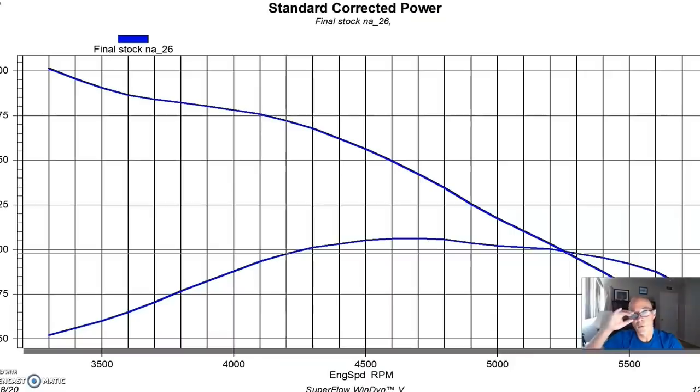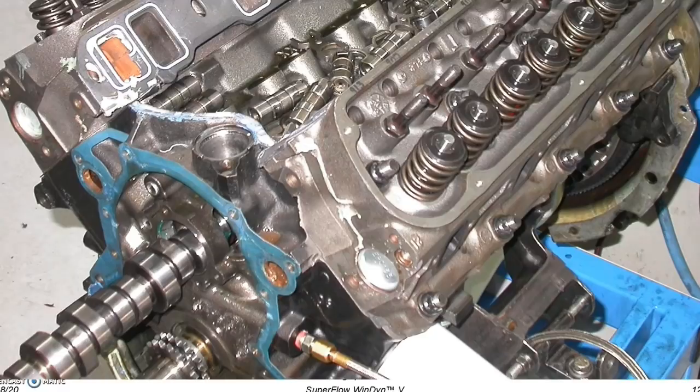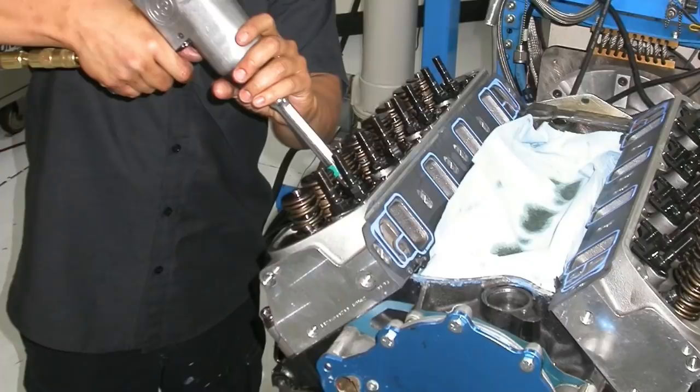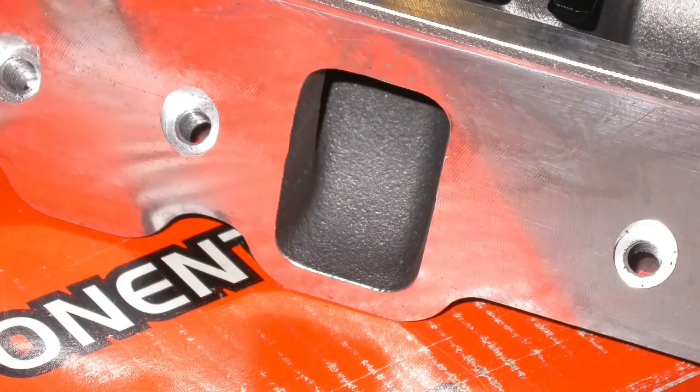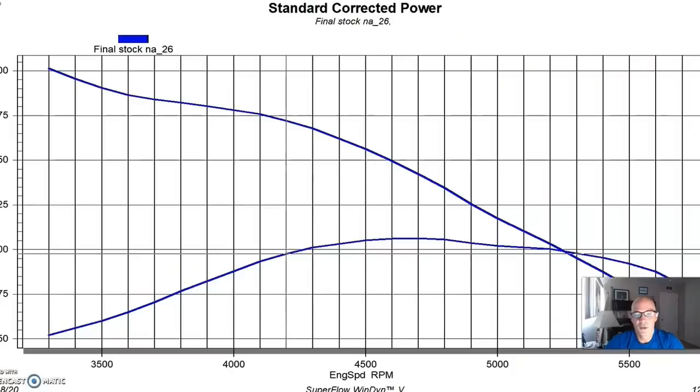So to provide that, we swapped out the stock E7TE iron heads for a set of aluminum RHS heads. The RHS heads were as cast with 200cc intake ports, and they flowed about 275 or so CFM. So they were a good upgrade compared to a stock set of E7TE iron heads, which probably flow 155 or 160 CFM on a good day. So it's a big step up.